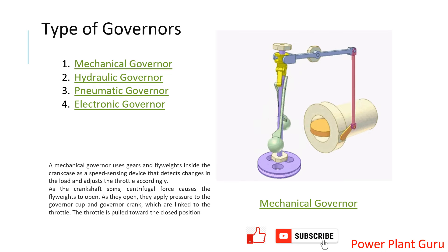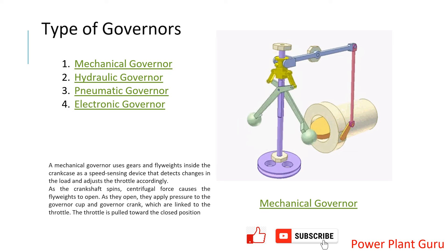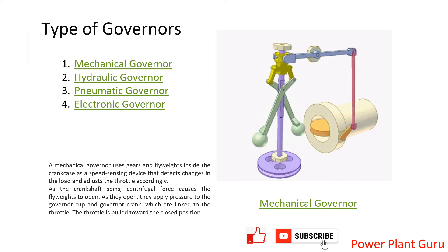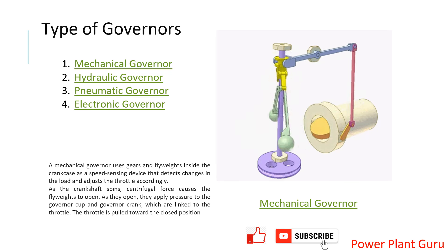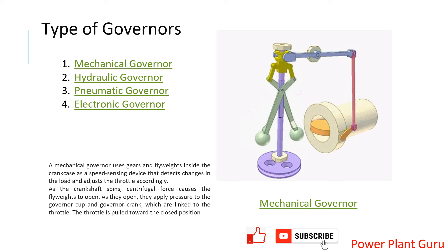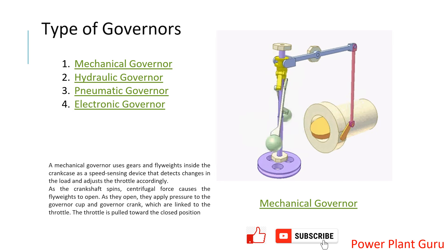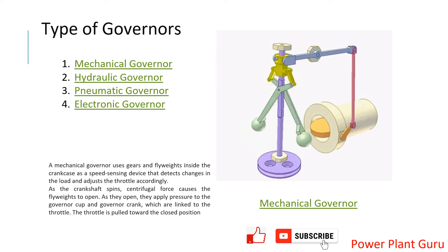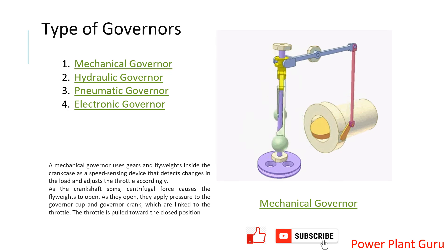There are different types of governors used in industry to control speed. What we are seeing now is an example of a mechanical governor. This is a principle used to understand how it works — it was used in very old machines and is not in common application today, but you may find it in older machines.